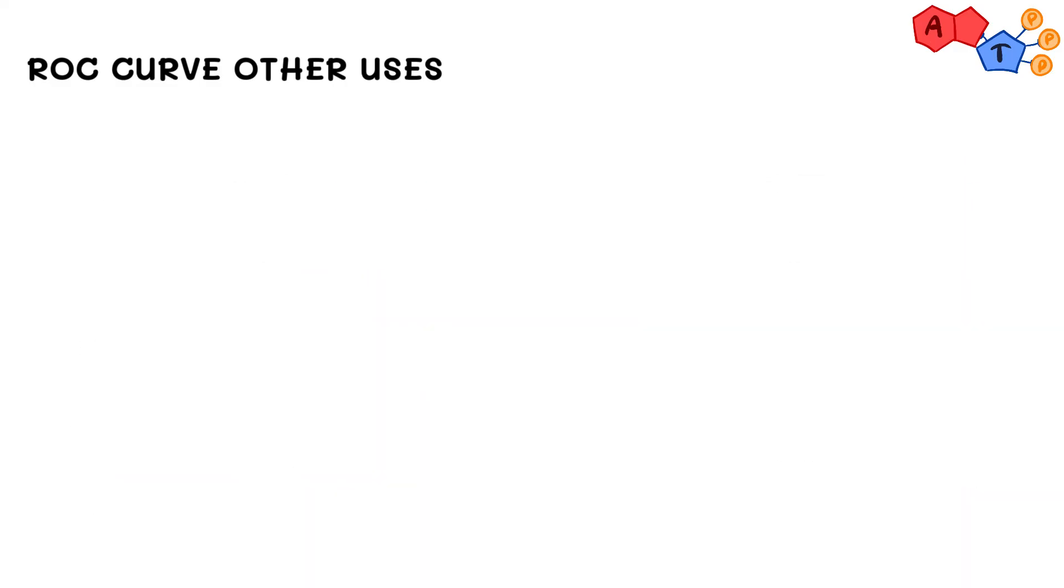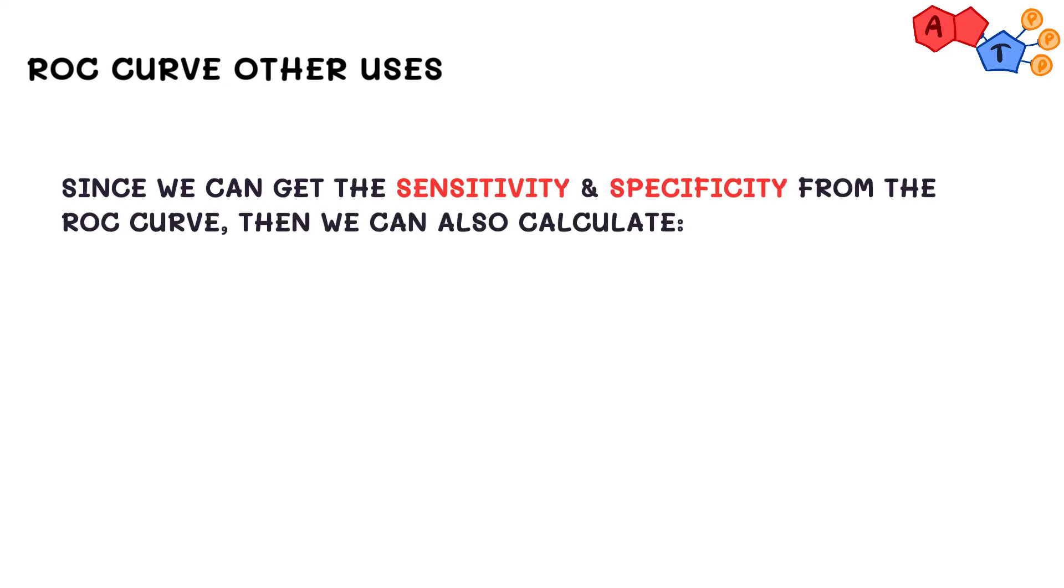Last but not least, since the ROC curve can reveal to us the sensitivity and specificity of a particular cutoff, we can actually find out the true positives, true negatives, false positives, and false negatives.